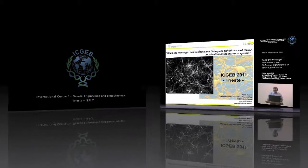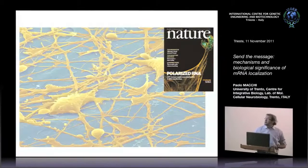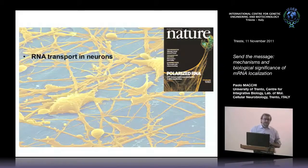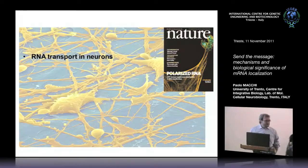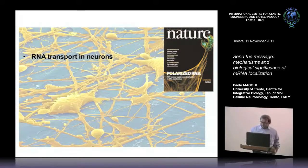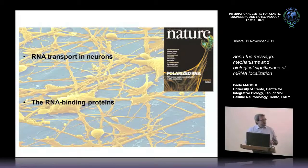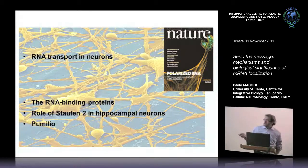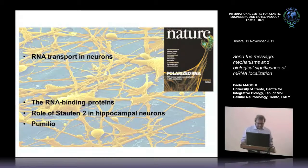Today I will divide my talk into two parts. The first part will give you an overview on the topic I'm working on: transport and localization in neurons, highlighting the biological significance of this mechanism. The second part will be more detailed, talking about two proteins we are interested in: Staufen II and Pumilio.